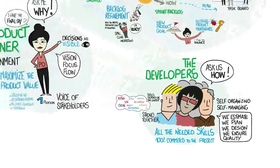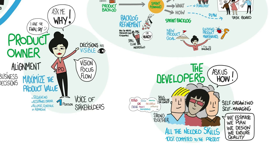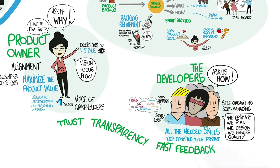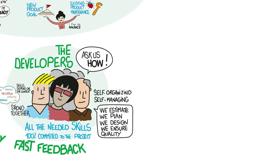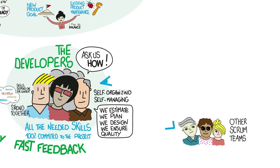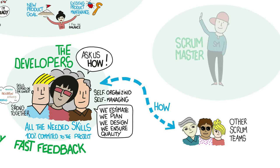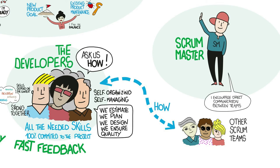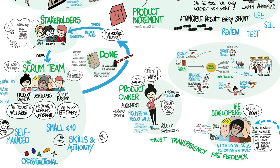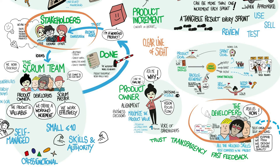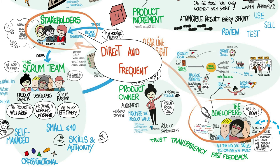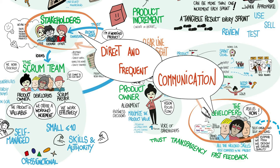Thanks to the transparency and tangible results created by Scrum, traditional command and control is no longer necessary to hold the team together. Scrum teams create better results faster using trust, transparency, and fast feedback. Sometimes more than one Scrum team will be involved on the same product — regardless of the number of teams, the responsibility for how stays with the developers. Scrum Masters do not become intermediaries between developers, but rather facilitate and encourage direct communication between the experts involved. Nothing in Scrum prevents developers from talking directly to stakeholders when it is helpful to do so.